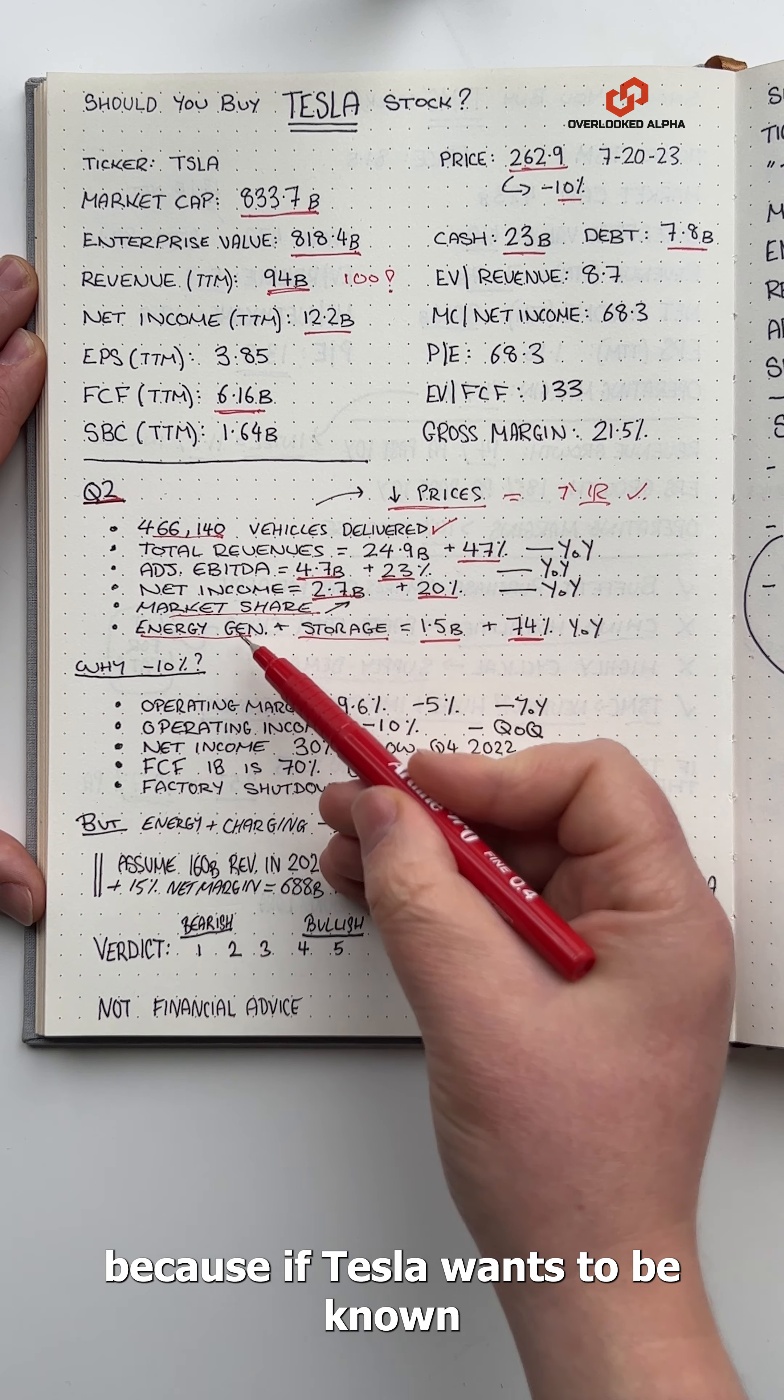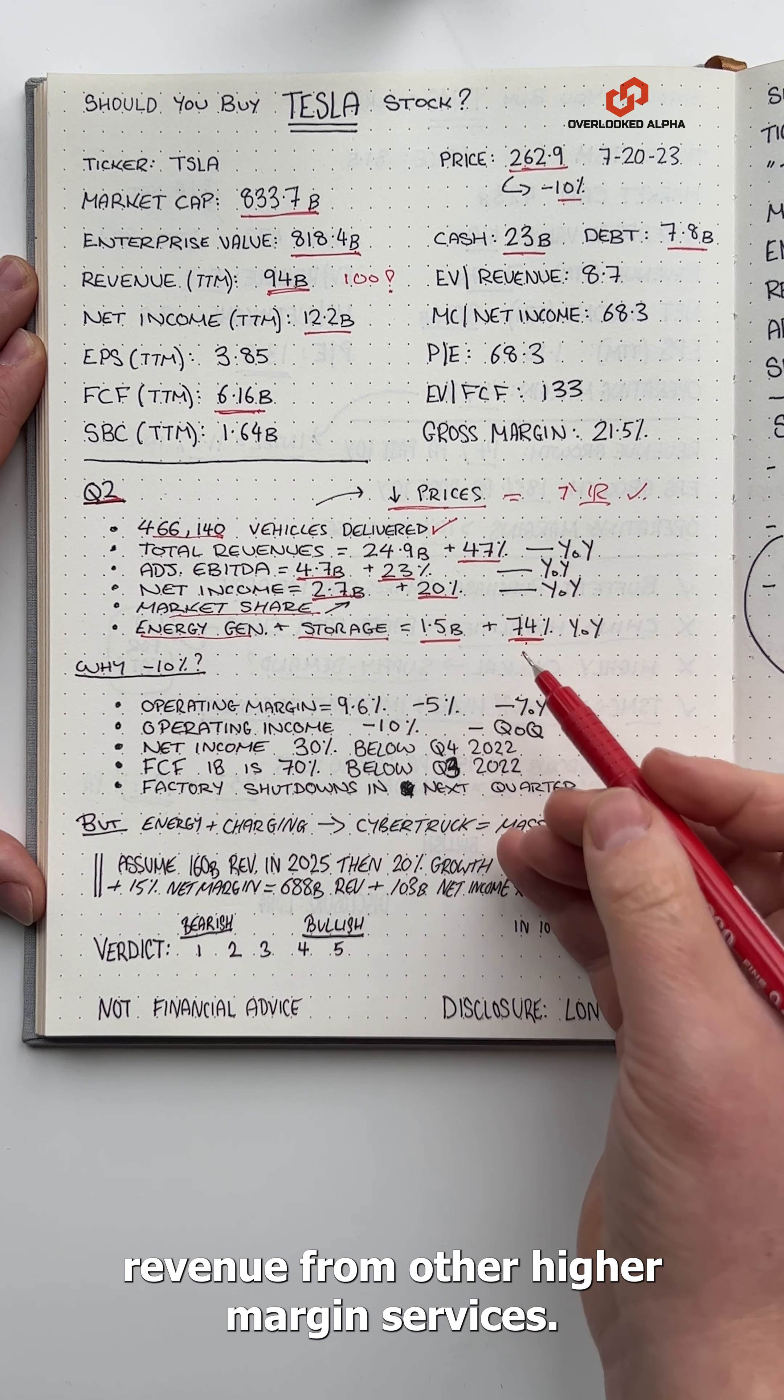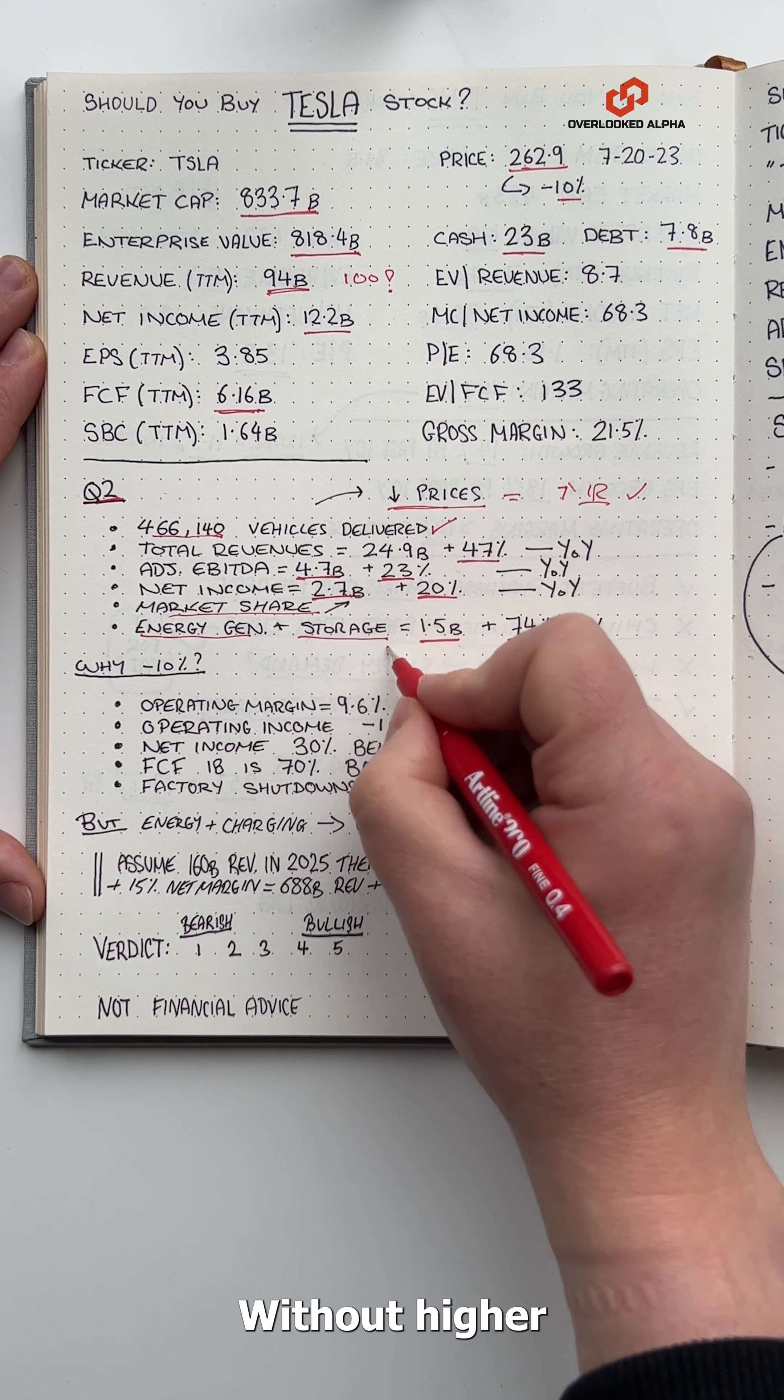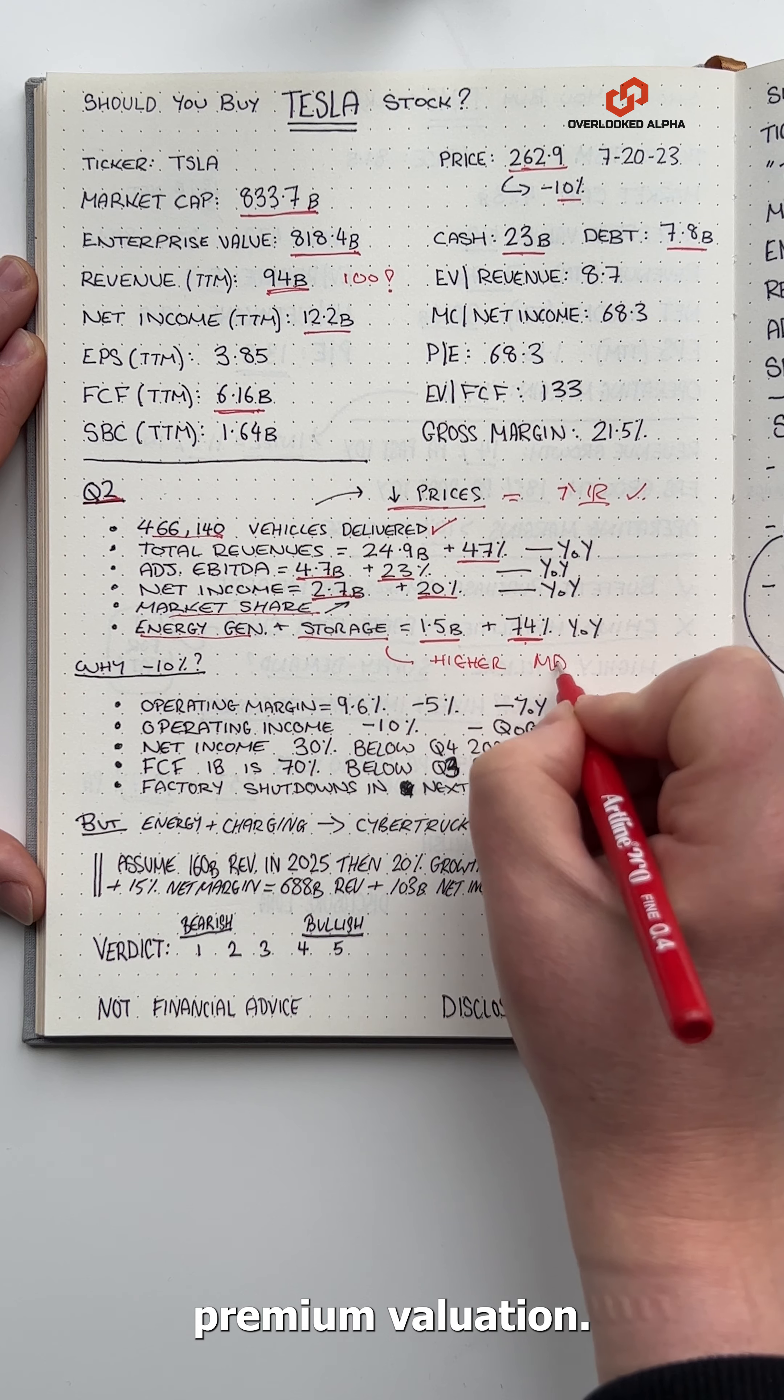This is important because if Tesla wants to be known as more than a car company, it needs to generate revenue from other higher margin services. Without higher margin products, it's much harder to justify Tesla's premium valuation.